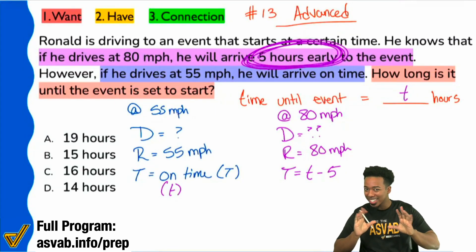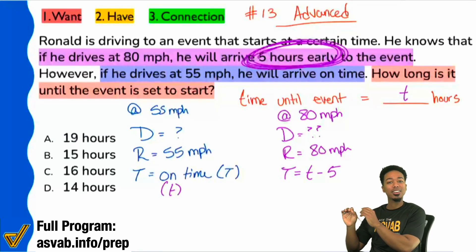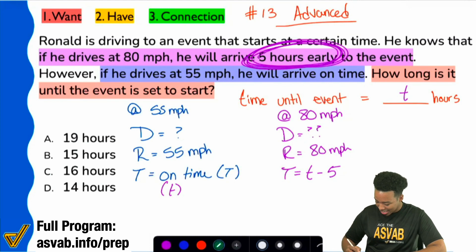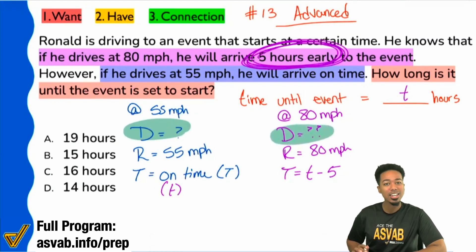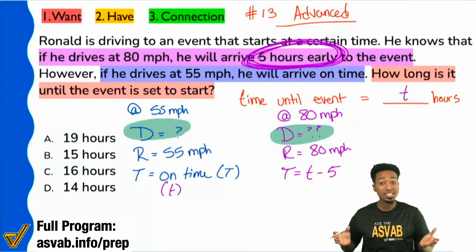So are you starting to get where I'm going with this? Because that wasn't the toughest part. The toughest part is realizing that these two distances over here, this distance and this one over here, these are the same exact distance. We're just talking about different speeds and different times, but the distance to the event is the same. It's the exact same. Doesn't matter what scenario you're going under, the distance remains the same.